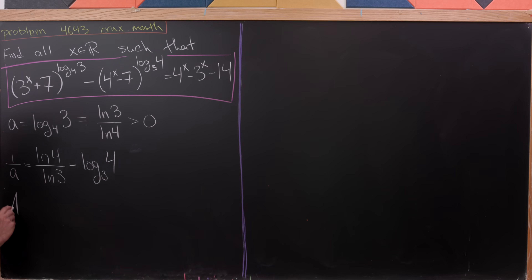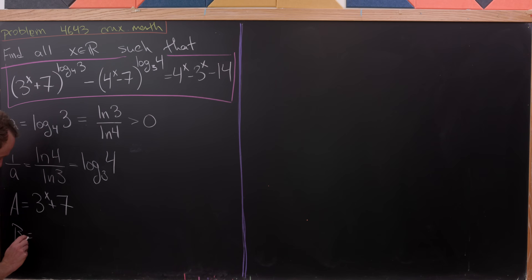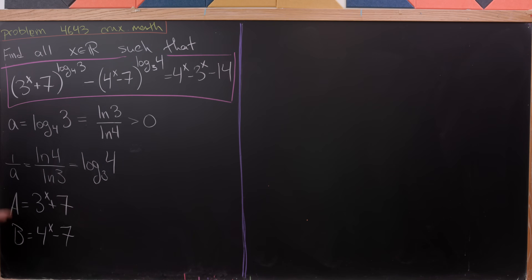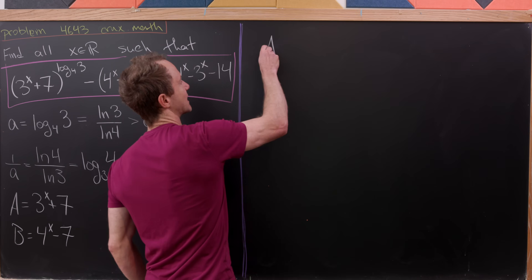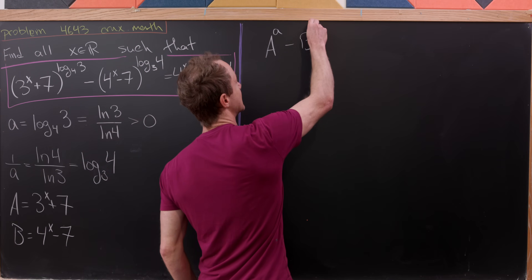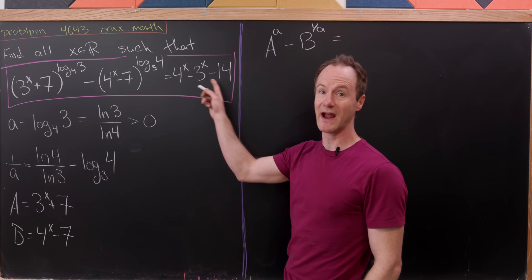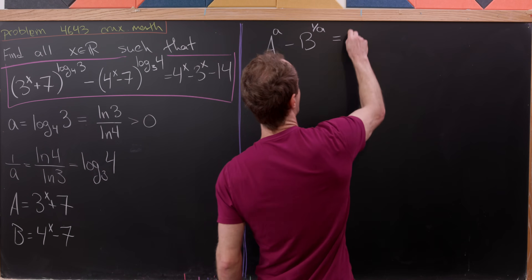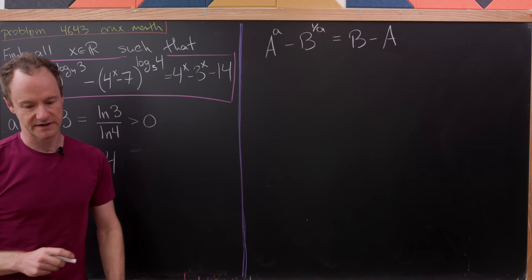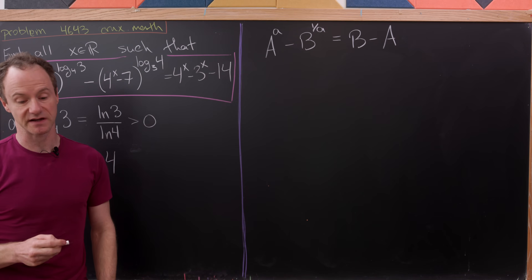Let's introduce some other notation. Let capital A equal 3 to the x plus 7 — that's the first term — and capital B equal 4 to the x minus 7 — that's the second term. Now let's see what our equation becomes. We're going to have A to the power lowercase a, which is clearly the first term, minus B to the power 1 over a, which is the second term. And the right-hand side of the equation is simply capital B minus capital A.